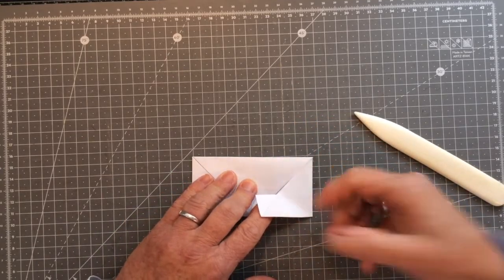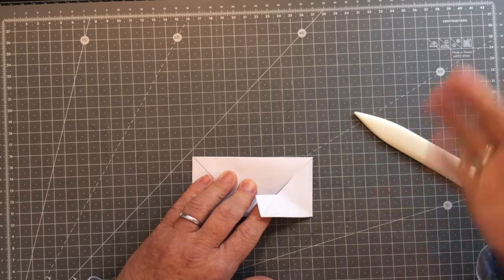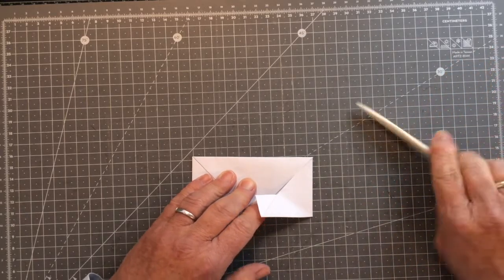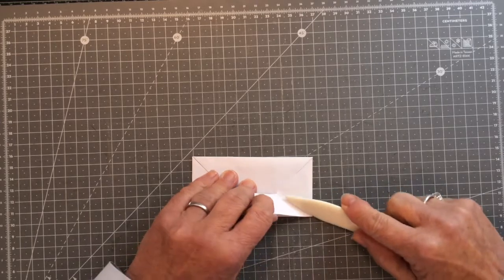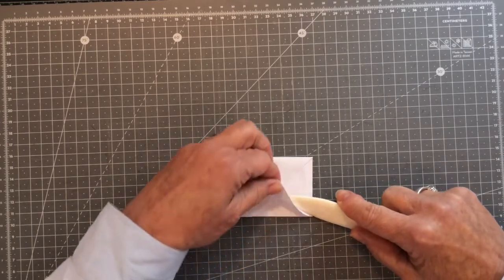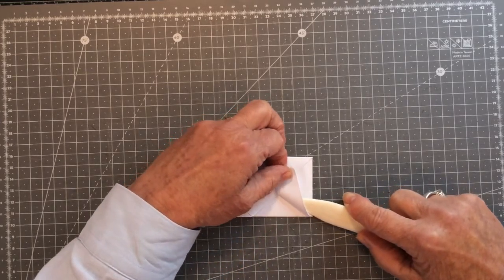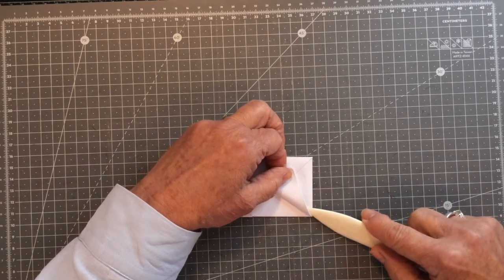and crease this portion so that it lines up with that or you can just wing it now when you've done this several times you can wing it and it's not hard I tend to like to just put my bone folder on that corner just lift this portion up until I can see it